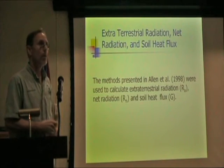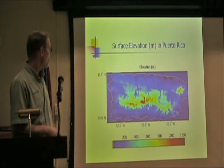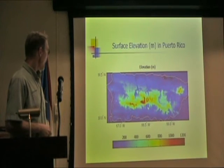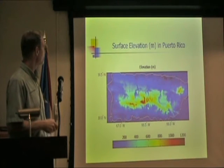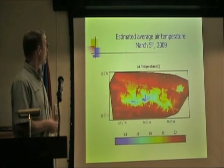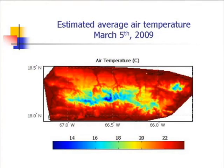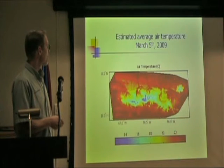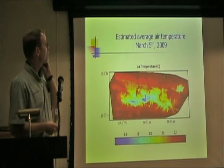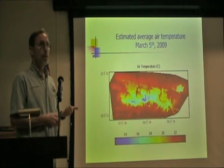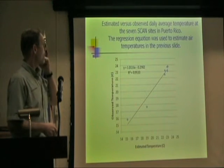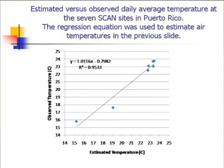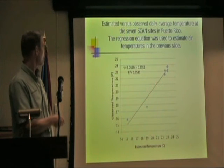Here we have elevation for Puerto Rico. The maximum is only about 1,200 meters in this area, and the minimum is zero, which is the ocean around the outside. From that we estimated air temperature. On March 5th, we have about 13 to 14 degrees average air temperature up in the mountains and about 22 to 23 degrees C along the coast. This was nudged based on real data from the seven NRCS sites, using this equation to produce our final air temperature values.